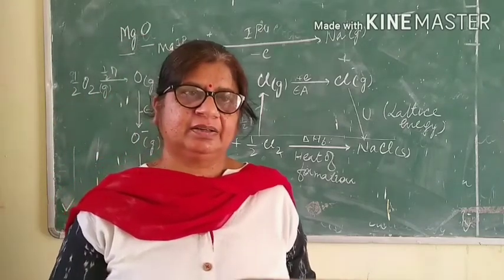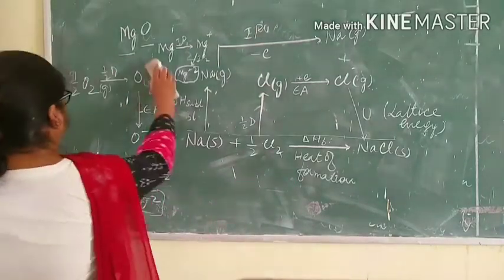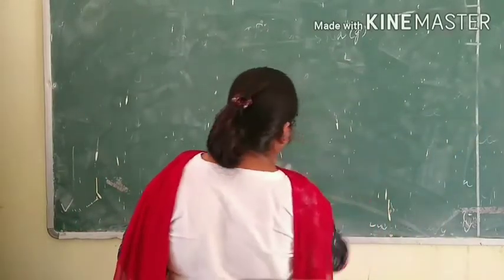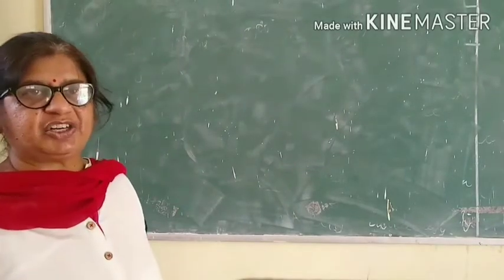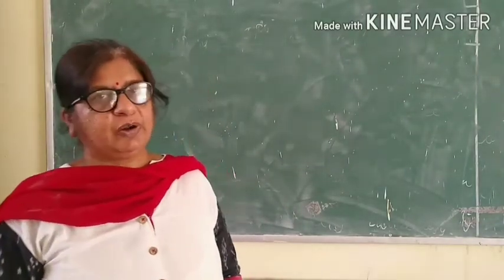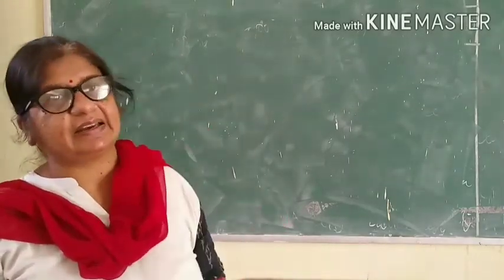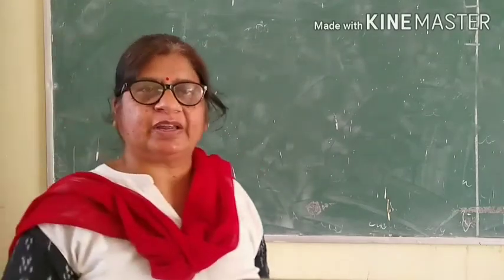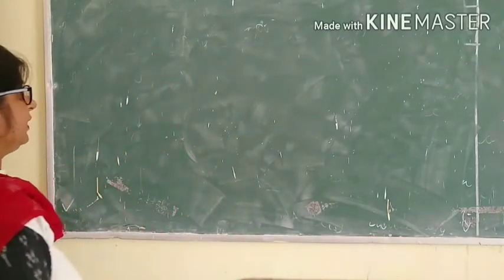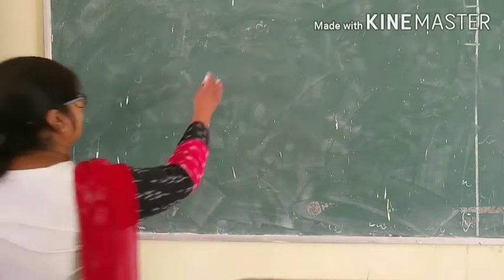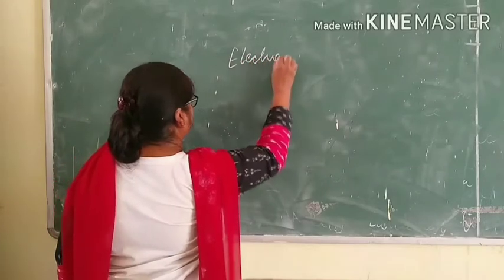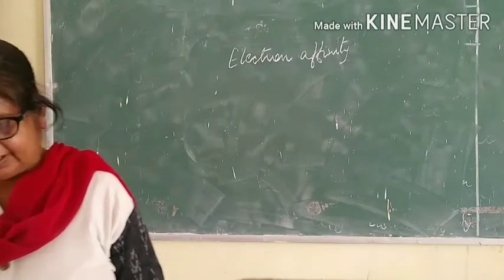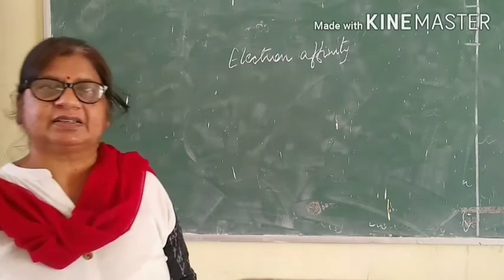The Born-Haber cycle shows that we can calculate the amount of any one energy if all other energies are known to us. That is, if we know the sublimation energy, the ionization potential energy, and the electron affinity, then we can calculate the lattice energy. The Born-Haber cycle is used to calculate any one of the energies when all other energies are known. Generally, we use it to calculate electron affinity, as the direct measurement of electron affinity is comparatively difficult. The Born-Haber cycle also enables us to understand why some compounds are formed and why some are not.